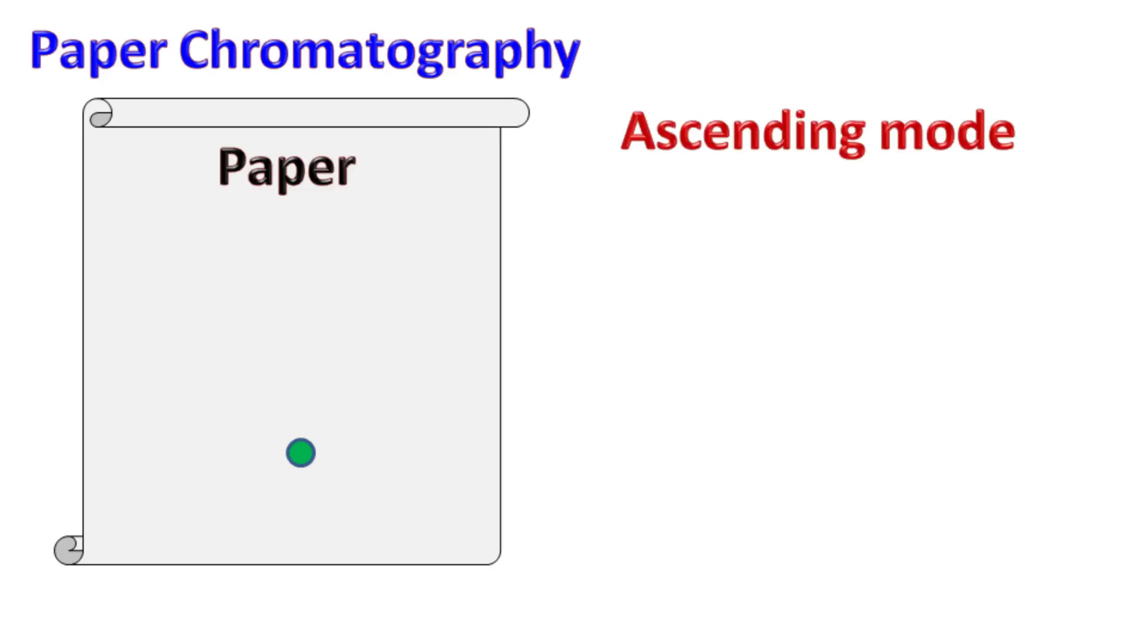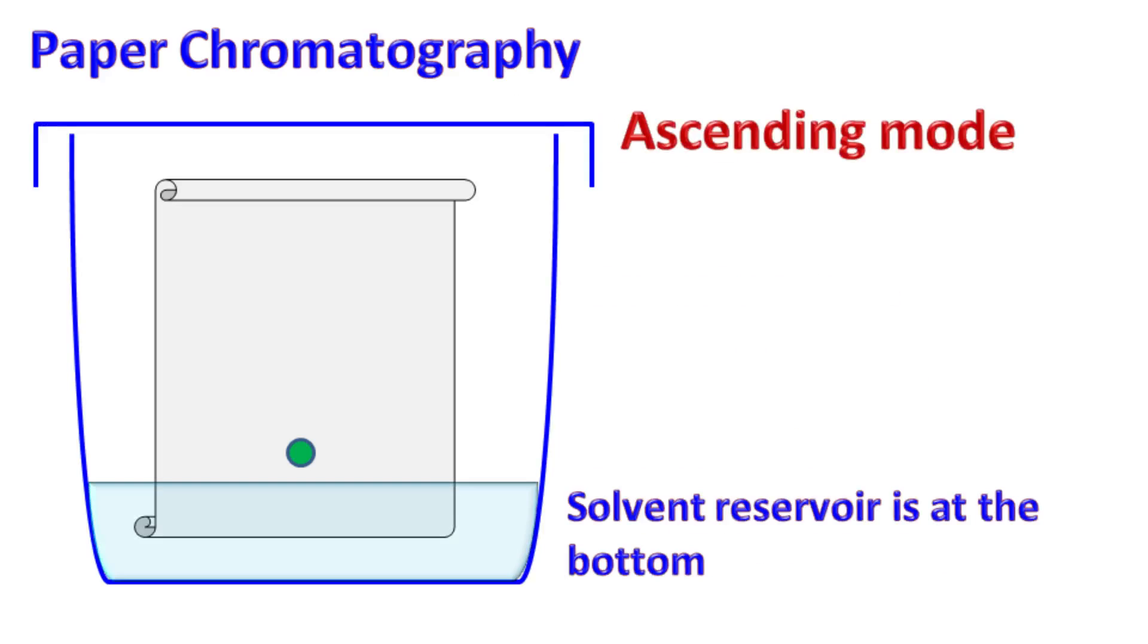In ascending mode, the mobile phase solvent is kept at the bottom of the chamber. A small portion of paper is immersed in the mobile phase. The solvent moves upwards due to capillary action. During this process, the sample molecules get separated because of the difference in the solubility of molecules in the mobile phase and the stationary phase.